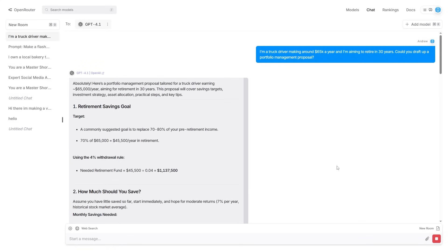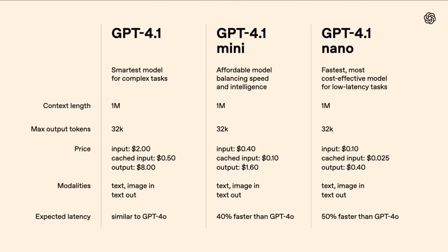GPT-4.1 wasn't the only model released — they also released two smaller versions for different use cases. The main model, designed for complex tasks, has a context length of over 1 million tokens, a maximum output of 32,000 tokens, and relatively cheap pricing compared to other models. It supports text and image input with text output, and expected latency is similar to GPT-4.0.